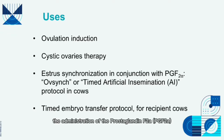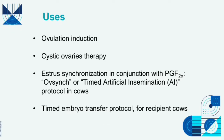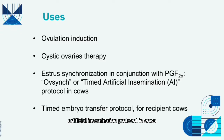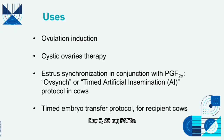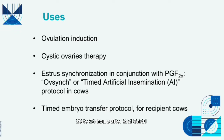Administration of prostaglandin F2α 9 days after GnRH will often shorten the interval to estrus. The OvSync estrus synchronization protocol in conjunction with prostaglandin F2α for timed artificial insemination in cows is as follows: Day 0 — 100 micrograms GnRH; Day 7 — 25 mg prostaglandin F2α; Day 9 — 100 micrograms GnRH. Breed cattle by artificial insemination 20 to 24 hours after the second GnRH.